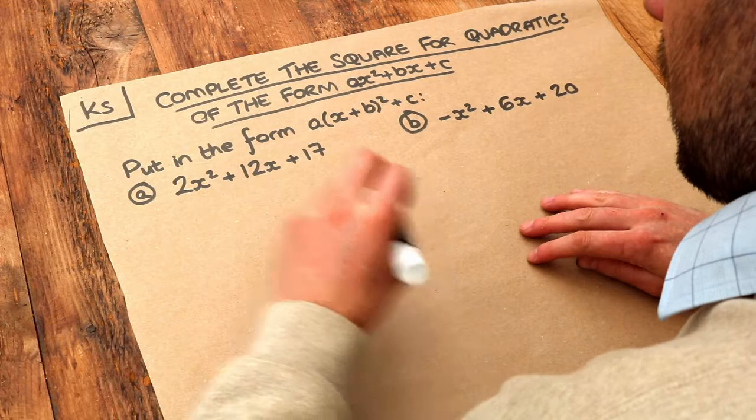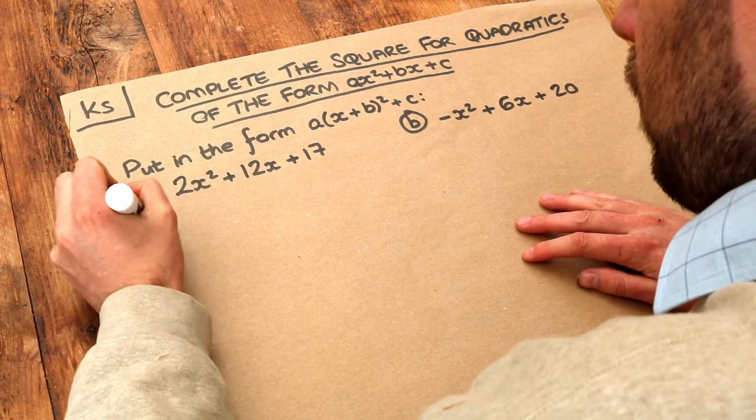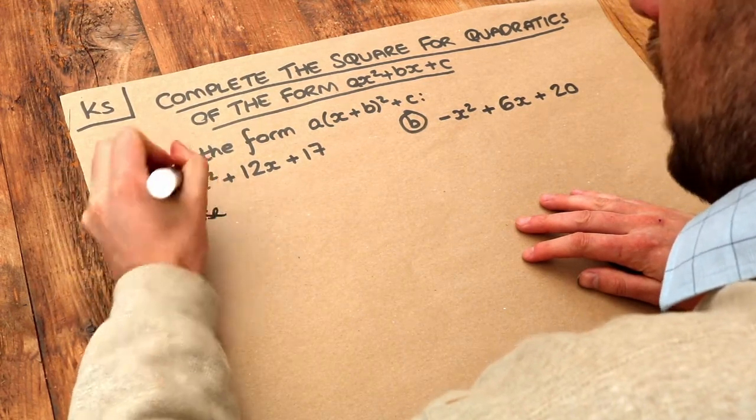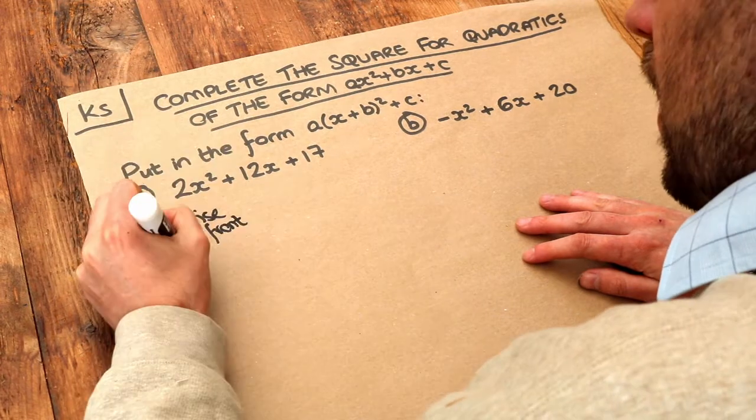Now the method is this. We firstly factorise the coefficient of x squared, the number in front of x squared, out of the first two terms.